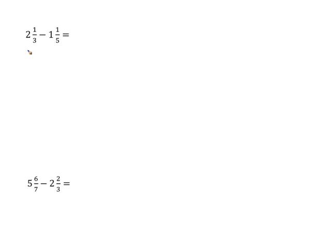We did that in lesson six. When we subtract from the whole, we decompose the minuend. Two and one-third becomes two, then one-third. Now we're going to subtract from two, which is our whole.